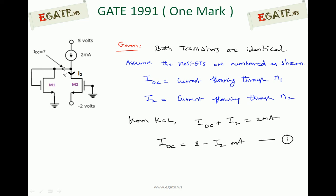IDC is the drain current flowing in transistor M1, and I2 is the drain current flowing in transistor M2. IDC is the drain current of M1 — it is not the sum of drain and gate currents, because gate current is always zero for MOSFETs. The gate and channel are insulated by an SiO₂ layer, which does not allow any charge carriers to move from the gate to the channel side. Therefore, the entire IDC always flows through the drain of M1.